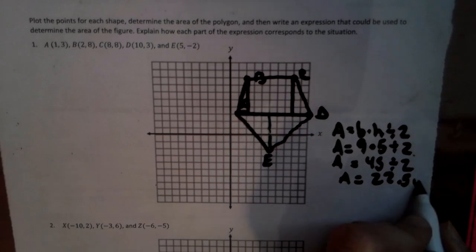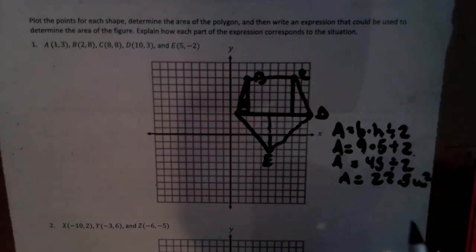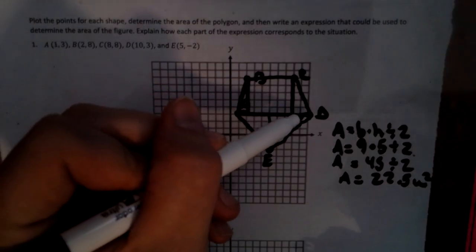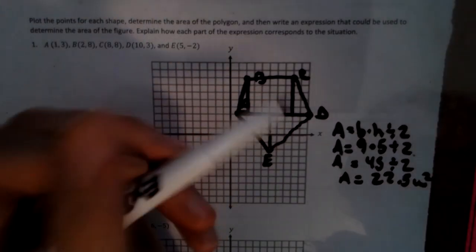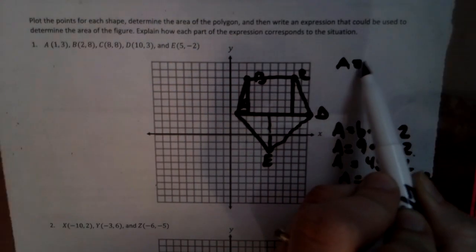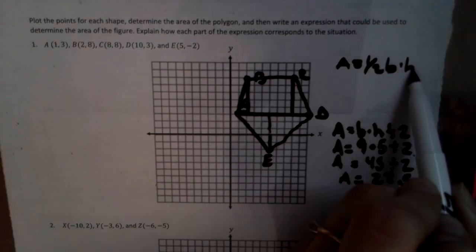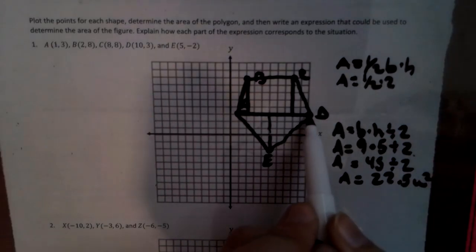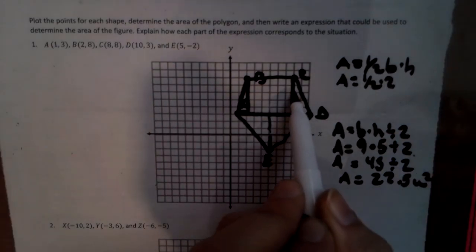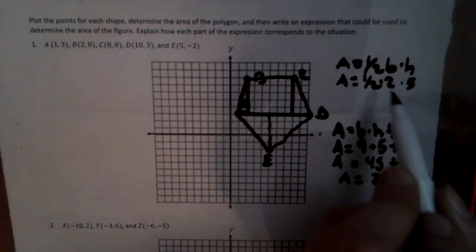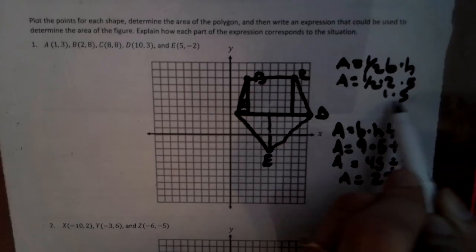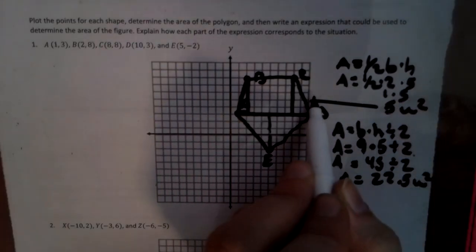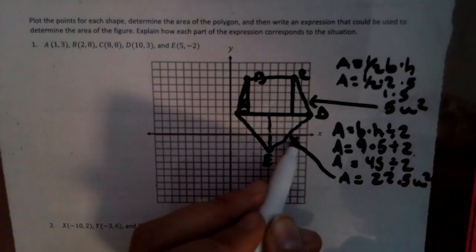And we just call them units squared for right now. So that's that big triangle. So now we have this little triangle which we have a base of two. So area equals half base height. I'm using the formula so you can see how they're used. The base is two, the height is one, two, three, four, five. Half of two is one, one times five is five. Five units squared. So that's that triangle, that's that big triangle.